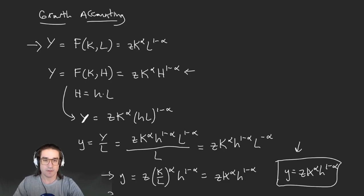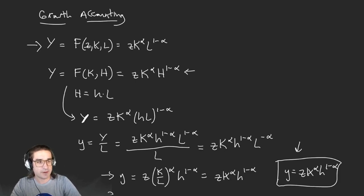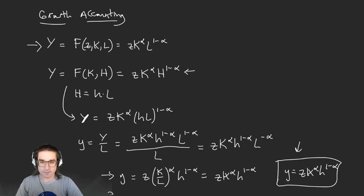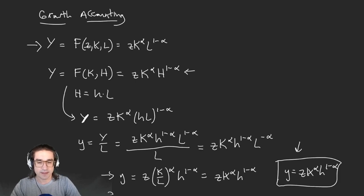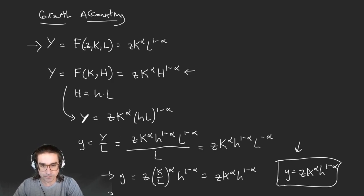Really when I write this, I should write Z, K, and L — where Z is our technology parameter that's improving over time. So production is some function of the level of technology, the amount of capital, and the amount of people in the economy. We're assuming everyone works roughly 40 hours a week, glossing over questions of retirement or unemployment.